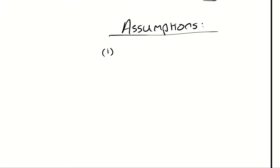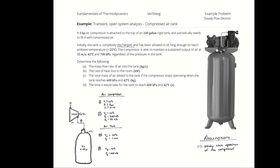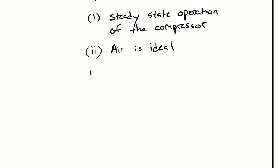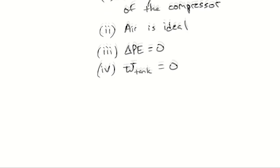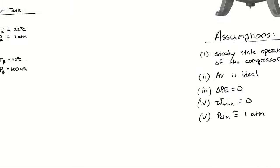I'll start a list of assumptions. First, the compressor is operating steadily. Second, the air is ideal. Third, I'll neglect all changes in potential energy. Fourth, I'll neglect any work in the tank. And I'll establish atmospheric pressure as around 1 atmosphere. That should be enough information to get started.